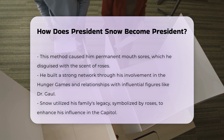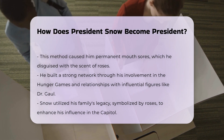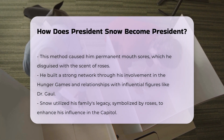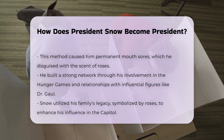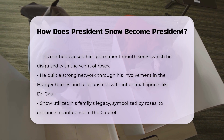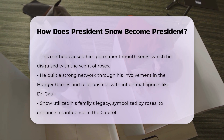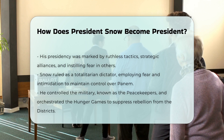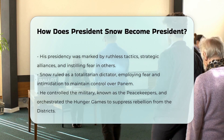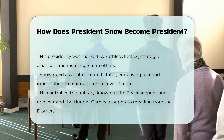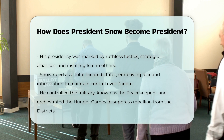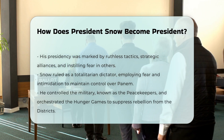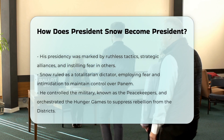Rise to presidency: There is no indication that Snow was democratically elected. Instead, his rise to the presidency was a result of his ruthless tactics, strategic alliances, and the fear he instilled in others. By the time of the main events in the Hunger Games trilogy, Snow had already established himself as a totalitarian dictator, ruling Panem through fear and intimidation.